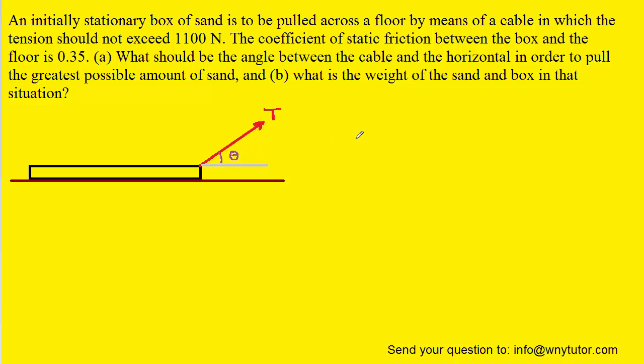Our first step is to draw a free body diagram of the box of sand. Of course, we have the tension force pulling upward on the box, labeled T. We have the downward gravitational force mg, the static frictional force which is opposing the motion of the box labeled F sub s,